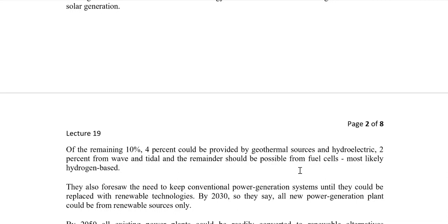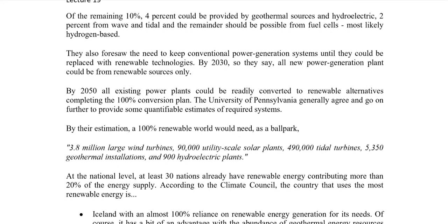The study also foresees a need to keep conventional power plants until they can be replaced with renewable ones. By 2030, all new power plants should be renewable sources, and by 2050 all existing power plants could be readily converted to renewable alternatives — a complete 100 percent conversion. The University of Pennsylvania generally agreed with this and also quantified some of the estimates.